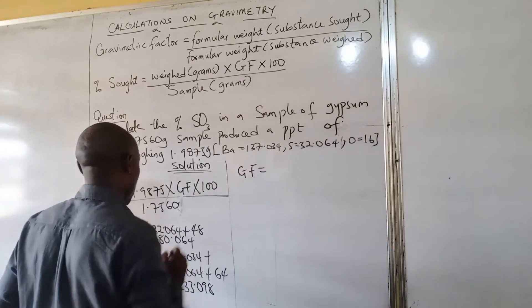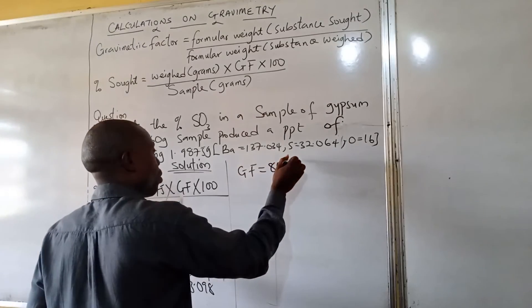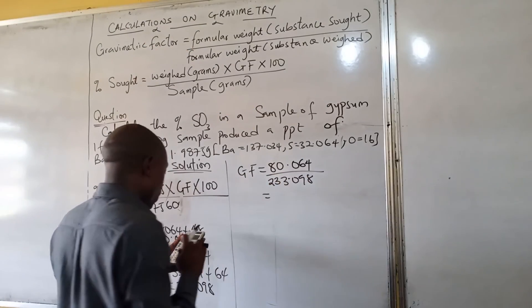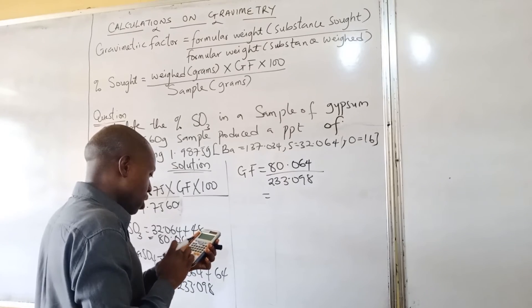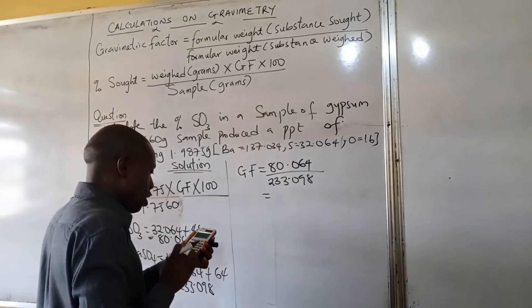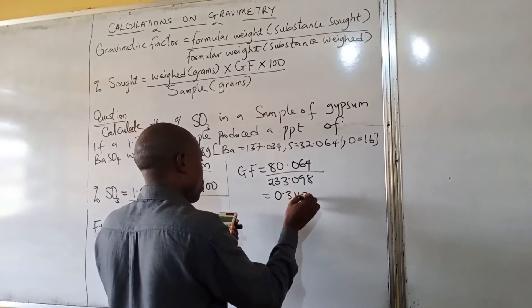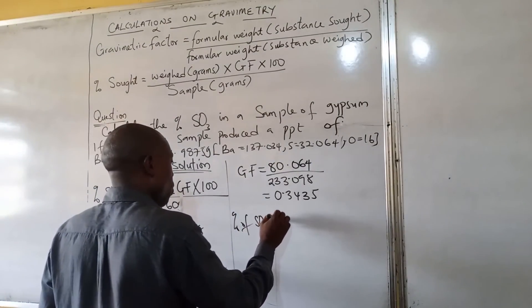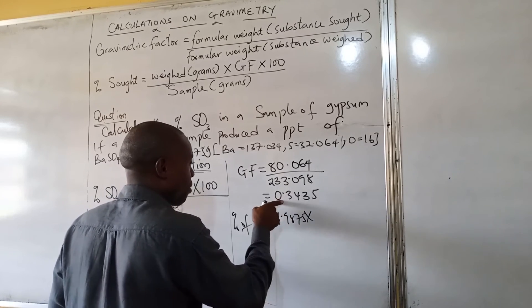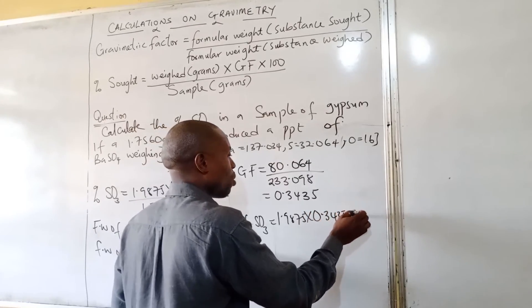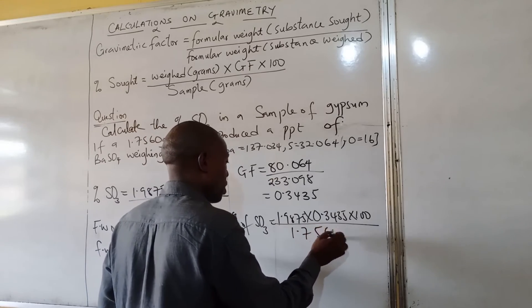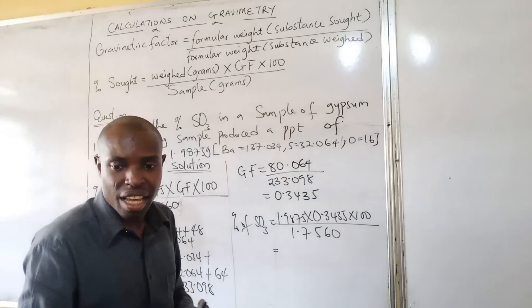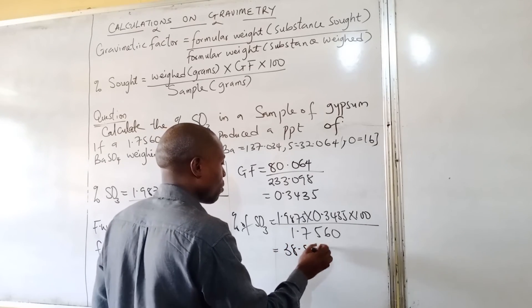So that's the formula weight. So the gravimetry factor now is equal to what? The percentage of SO₃ is equal to 1.9875 multiplied by the gravimetric factor which is 0.3435 times 100 over 1.7560 and the final answer should give me 38.876 percent.